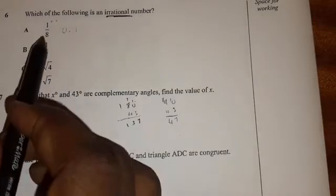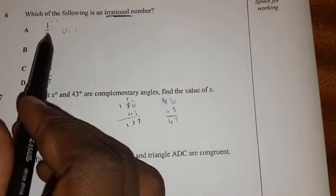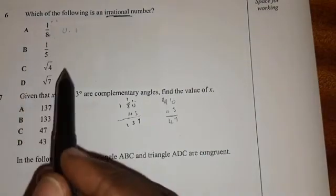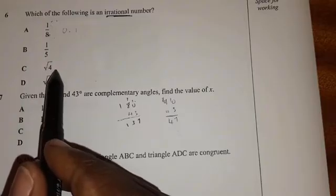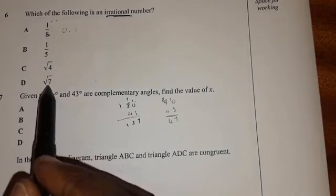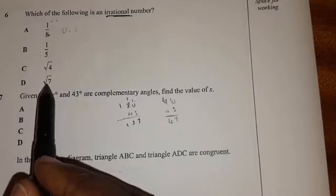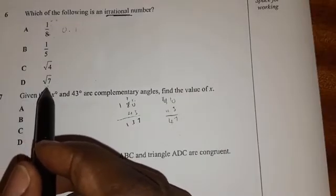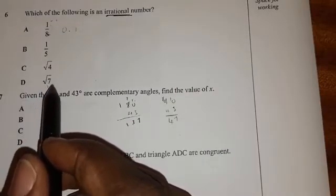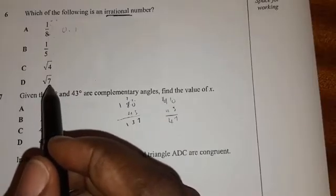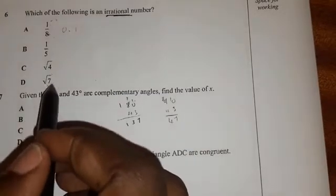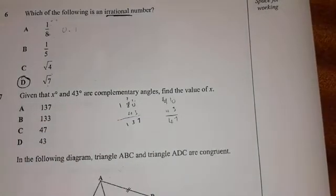So here, this one is already a fraction, so this one, which means this one is rational. This one is irrational. This one, the square root of four is two, and two is rational because you can write two as a fraction by saying two over one. But this one, this one is the square root of a non-perfect square number. So any square root of non-perfect square number, it will give you decimals that are non-recurring, but decimals that go forever. So meaning this one is irrational. So this is an irrational number.